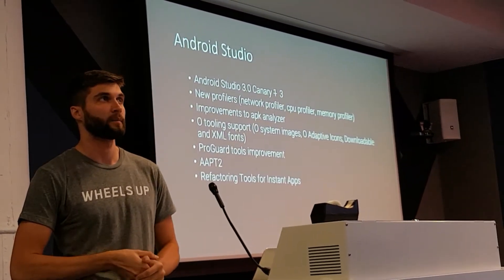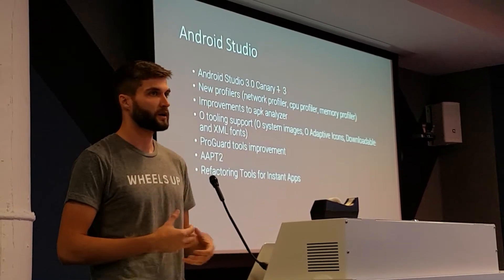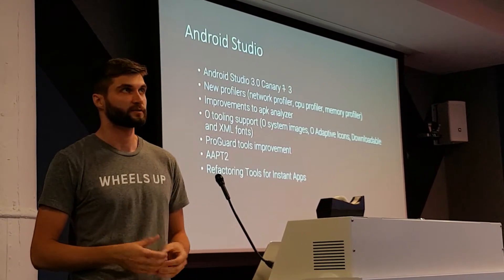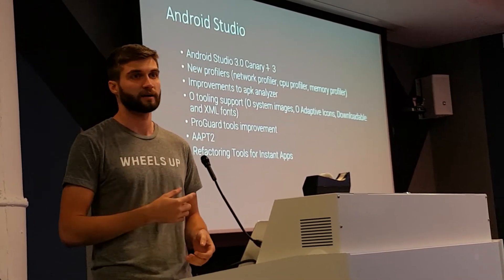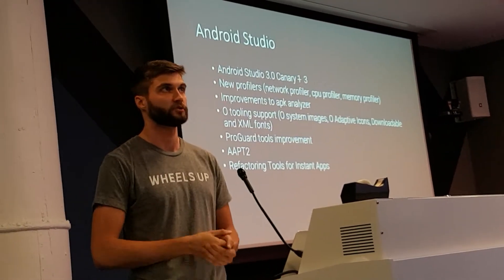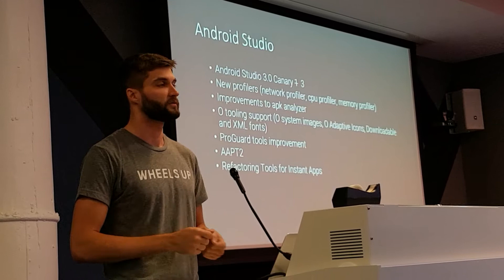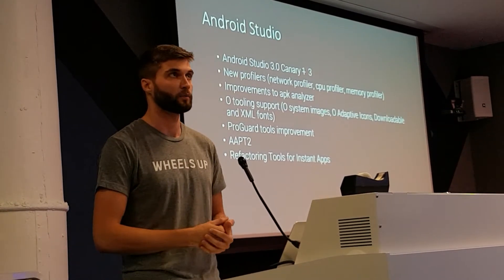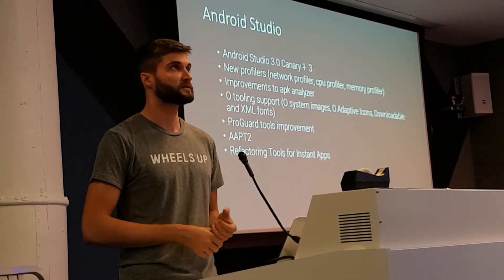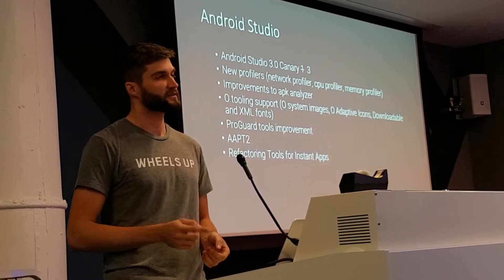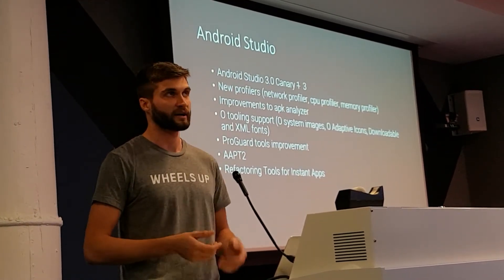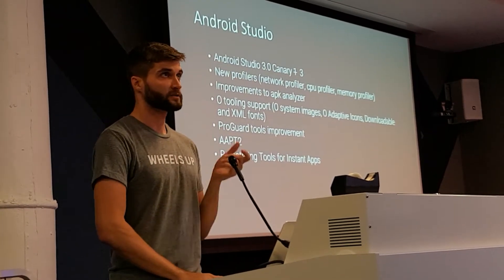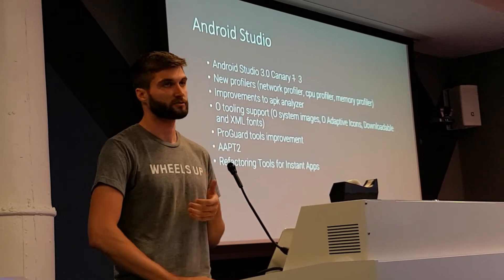They added new tooling support — you get O system images now, and there are menus to walk you through O adaptive icons and downloadable fonts. If you use ProGuard, it's historically been fairly hard to figure out and debug, so definitely check out the talk on shrinking your APK size. APT2 is shipping in Studio 3.0 — it's disabled by default, but you should turn it on and try it out since it'll be enabled by default later.